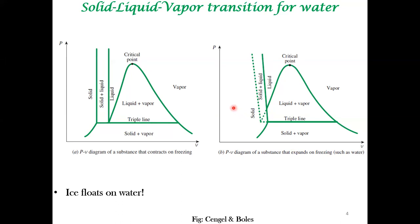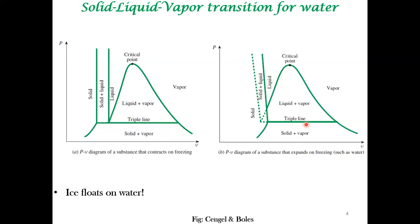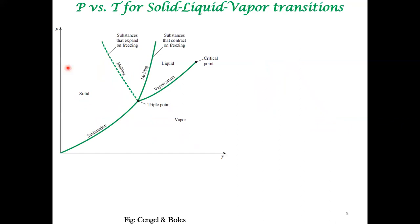We are now viewing the phase diagram in a slightly different manner. Previously we were looking at pressure and specific volume. A reminder: specific volume is useful in a single-phase region, but in a two-phase region, specific volume is just an average between two phases. This is another version of the phase diagram — we are plotting pressure on the y-axis and temperature on the x-axis.